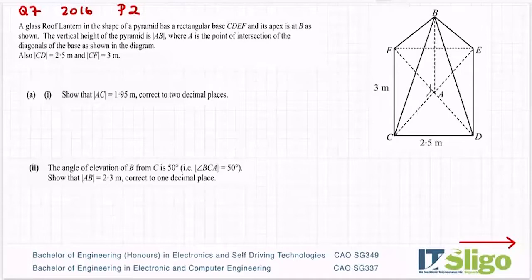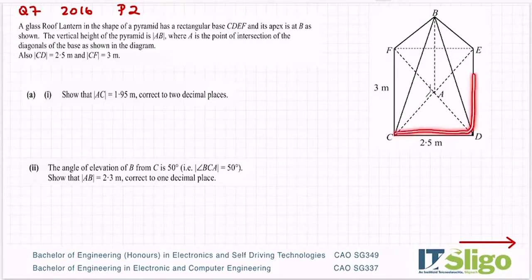Question 7 from 2016 was a 3D trig question. A glass roof lantern in the shape of a pyramid has a rectangular base CDEF, and its apex is at B as shown. So you have to imagine that 3D shape coming out of your desk. Do not make the mistake of seeing it as a 2D flat shape.